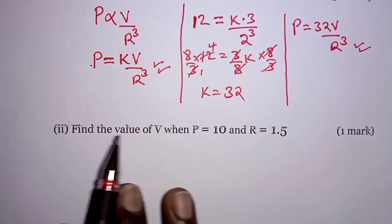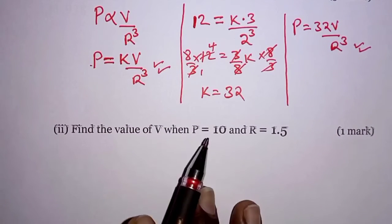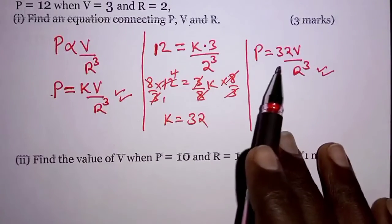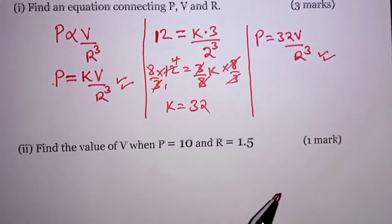So for the second part, you are required to find the value of V when P is 10 and R is 1.5. Now we are going to use the equation we have just determined to achieve that.